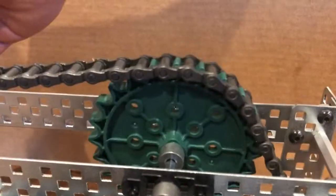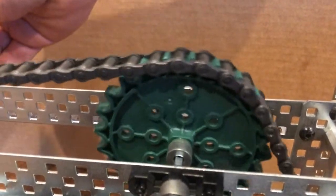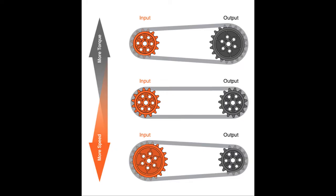Similarly to simple gears, torque and speed is dependent on the size of the gears or in this case sprockets. A smaller input sprocket connected to a bigger output sprocket will increase torque and decrease speed.